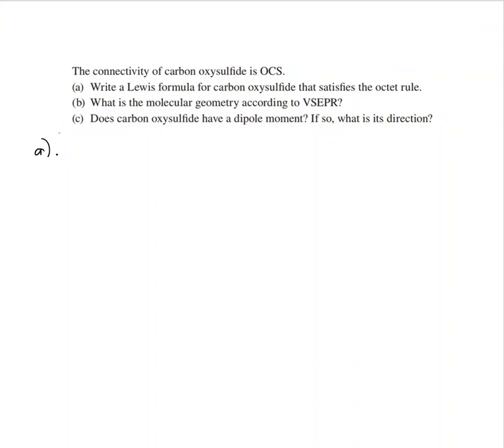To write a Lewis structure for carbon oxysulfide OCS: oxygen has 6 valence electrons, carbon has 4, sulfur has 6, so the total is 16 valence electrons.